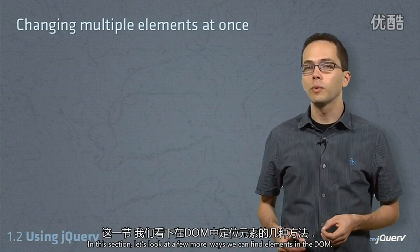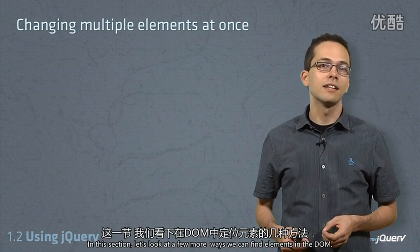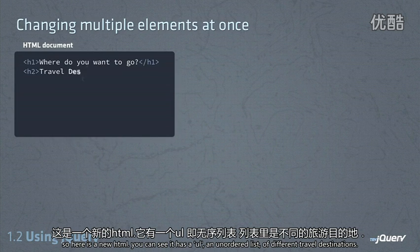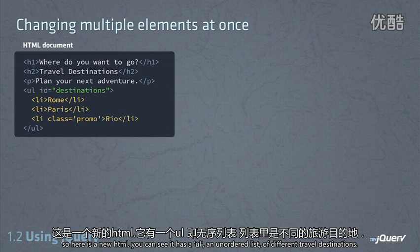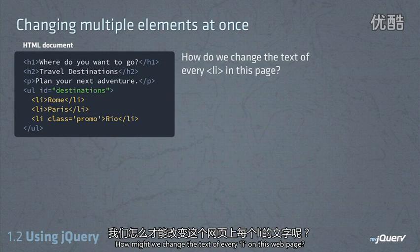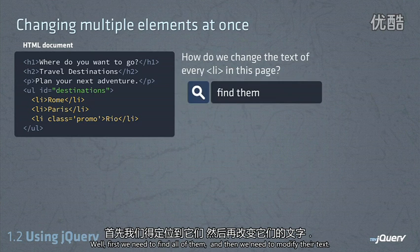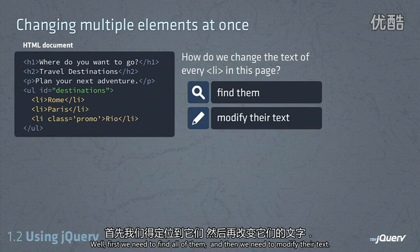In this section, let's look at a few more ways we can find elements in the DOM. So here's some new HTML. You can see it has a ul, or unordered list, of different travel destinations. How might we change the text of every li on this web page? Well, first we need to find all of them, and then we need to modify their text.